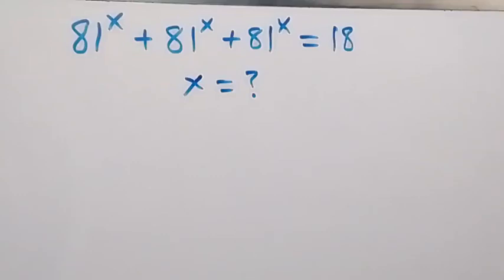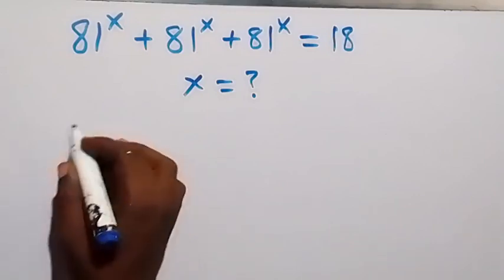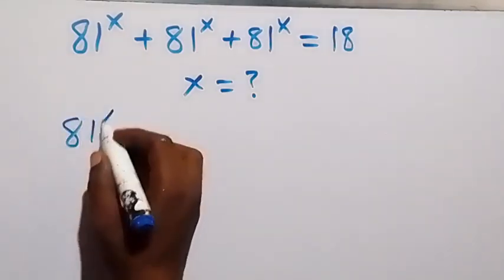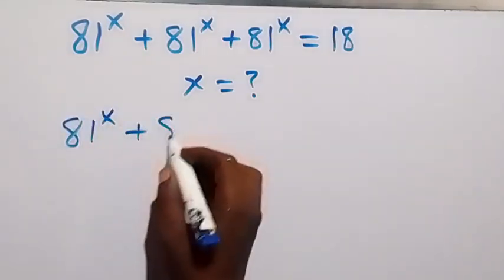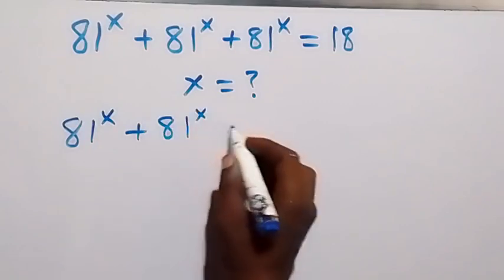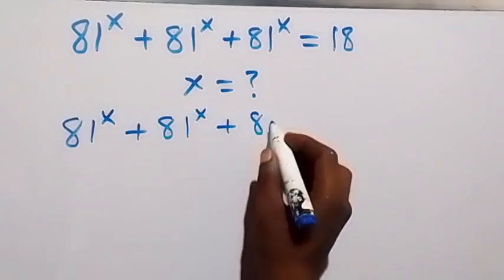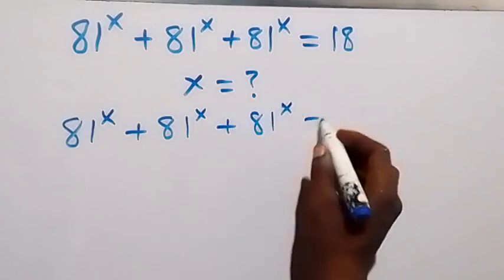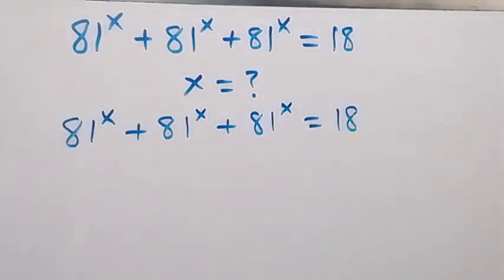Hello, you are welcome. How to solve for x in this exponent problem. We have 81 raised to power x, plus 81 raised to power x, plus 81 raised to power x equals 18.